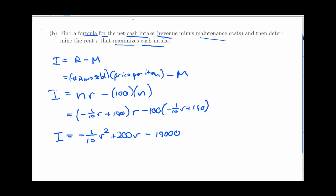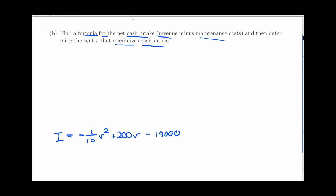And that's your cash intake as a function of R. If you want to see the details on that, just pause the video and you can work those through. So now let's remove all this stuff in the middle here and work with my function for I. What I want to do is maximize cash intake. Now I have a formula for I as a function of R, so I need to find I prime. That is negative one-fifth R plus 200.